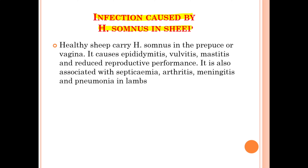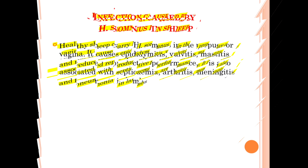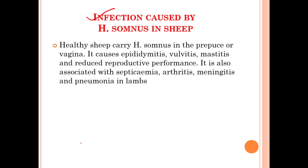In sheep, healthy animals carry Haemophilus somnus in the prepuce or vagina. Infection can cause epidermitis, vulvitis, mastitis, and reduced reproductive performance. It is also associated with septicemia, arthritis, meningitis, and pneumonia in the case of lambs.